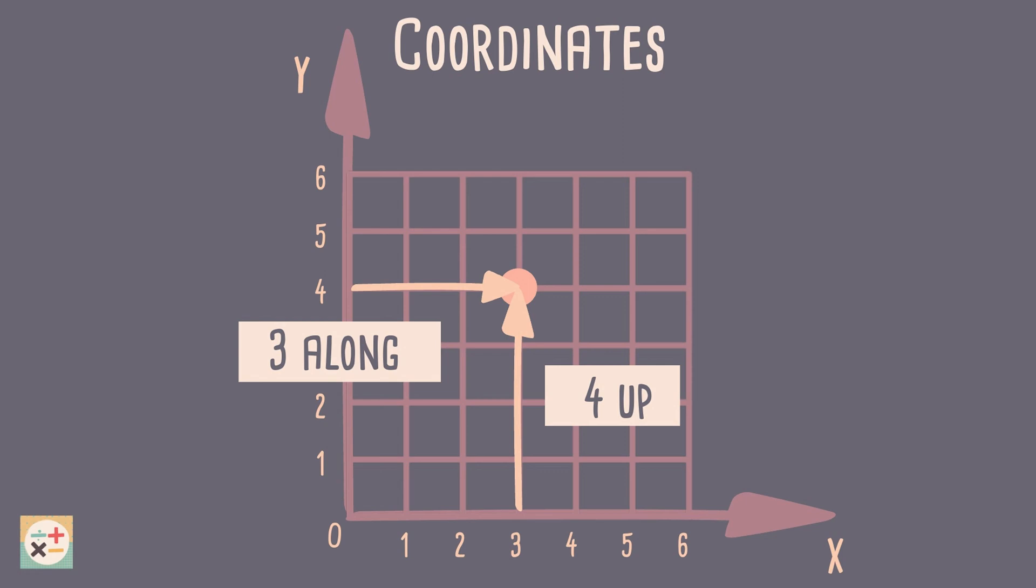So, the coordinate is 3 units across the x-axis, and 4 units up the y-axis. To write the coordinate down, we always put the horizontal distance first, followed by the vertical distance.